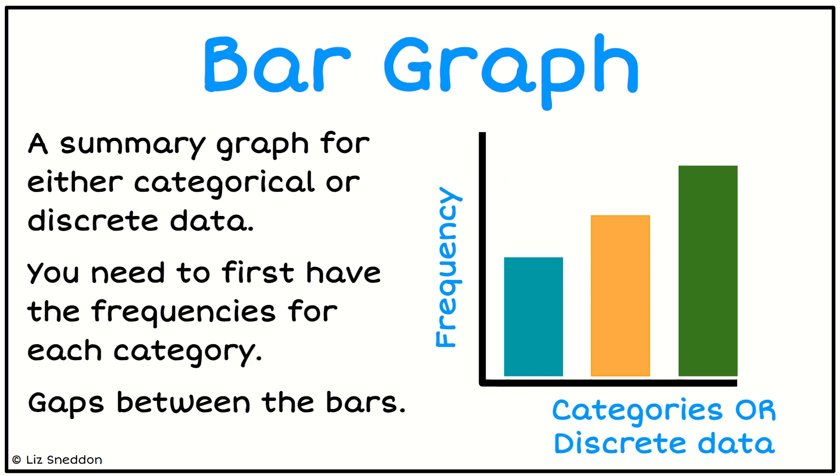A bar graph has to have categorical data or discrete data because the bars are not allowed to touch - we've got to have gaps between them. If I'm counting the number of pencils, it's got to be a whole number. I can't have one and a half pencils; it's either one or two. That's why we have the gaps between.